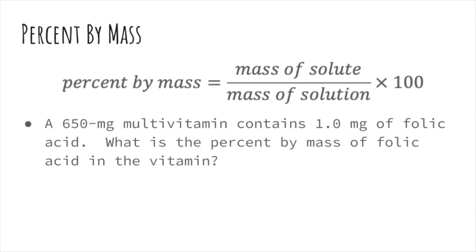Percent by mass is determined by dividing the mass of the solute by the total mass of the solution times 100. It doesn't matter what mass units you use—grams, kilograms, milligrams—as long as you use the same units on top and on bottom for this calculation.